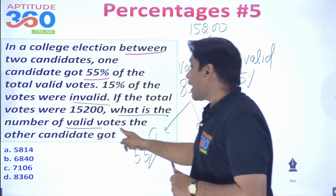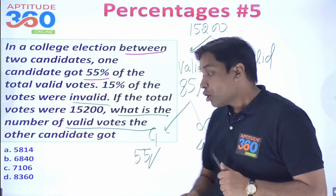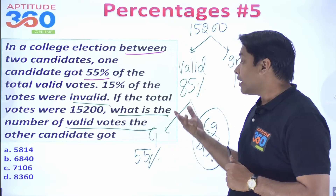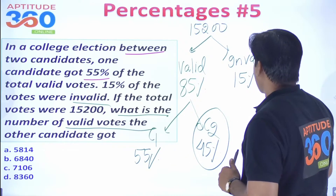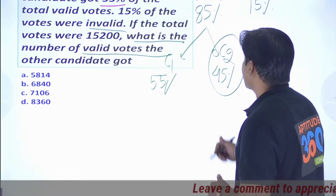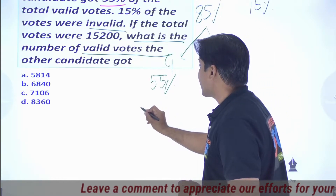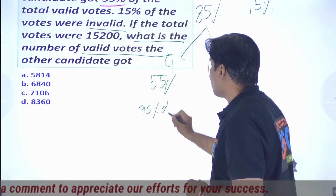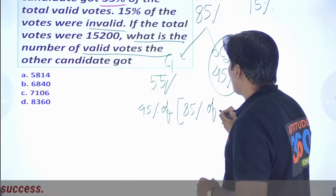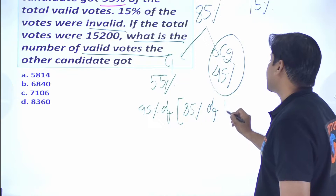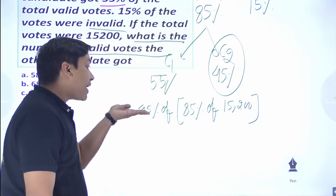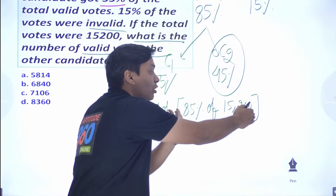We need to find how many valid votes the other candidate received. That is 45% of 85% of the total 15,200 votes. This may look complex, but it simplifies: 45% = 9/20 and 85% = 17/20.